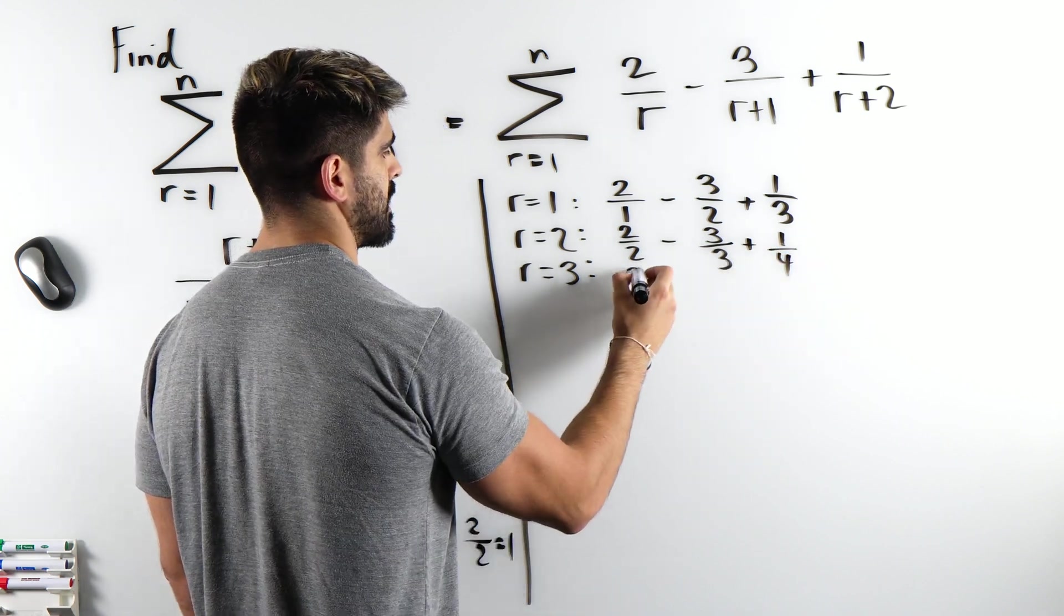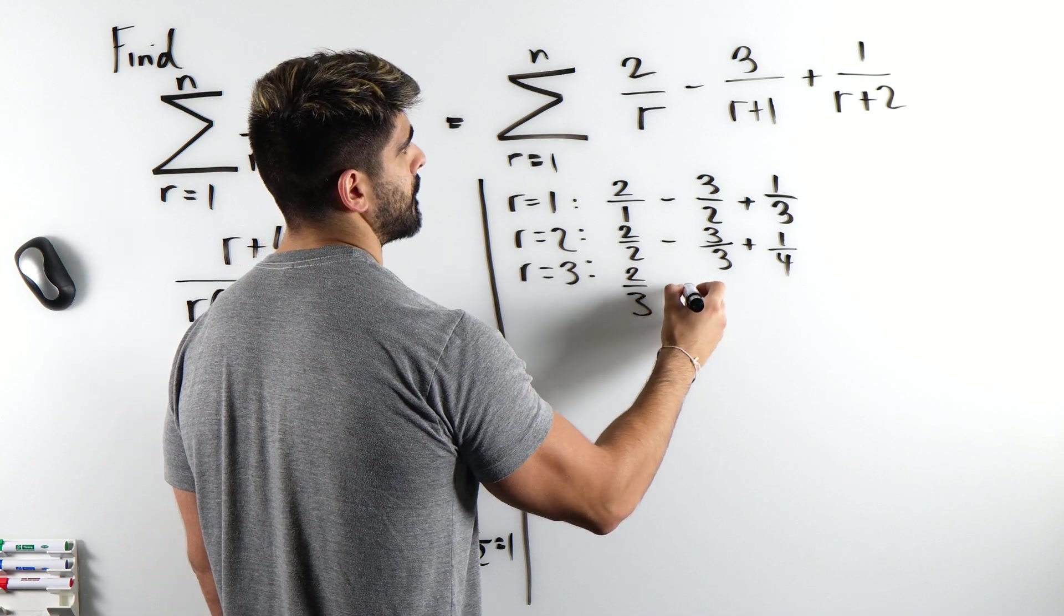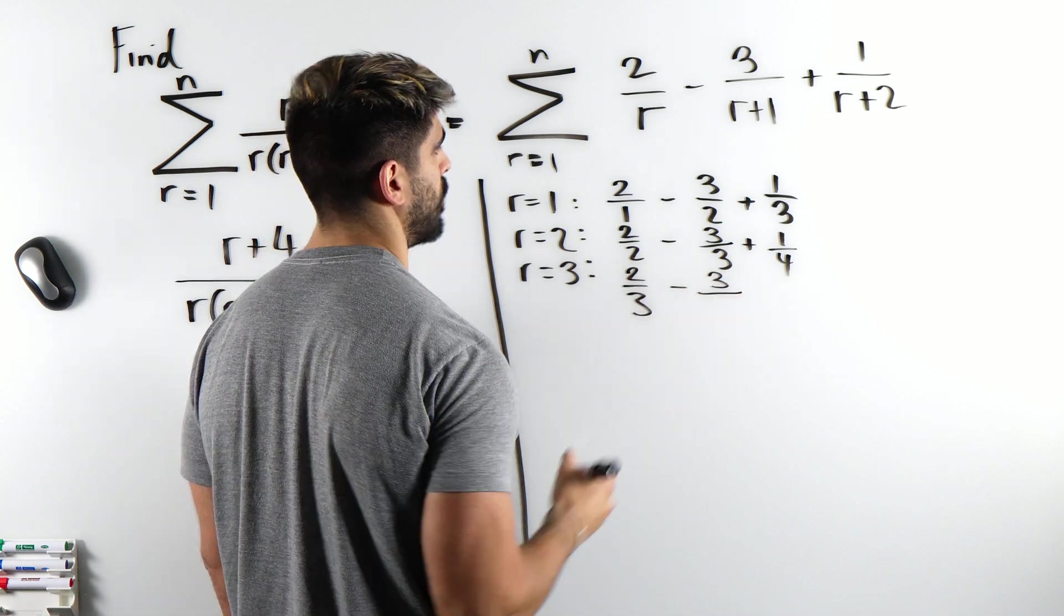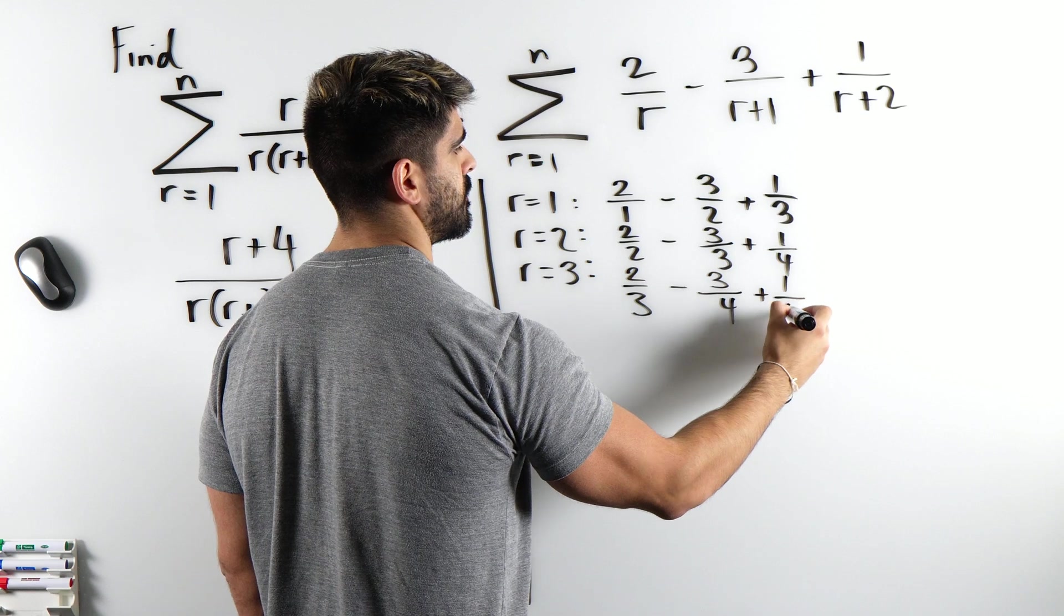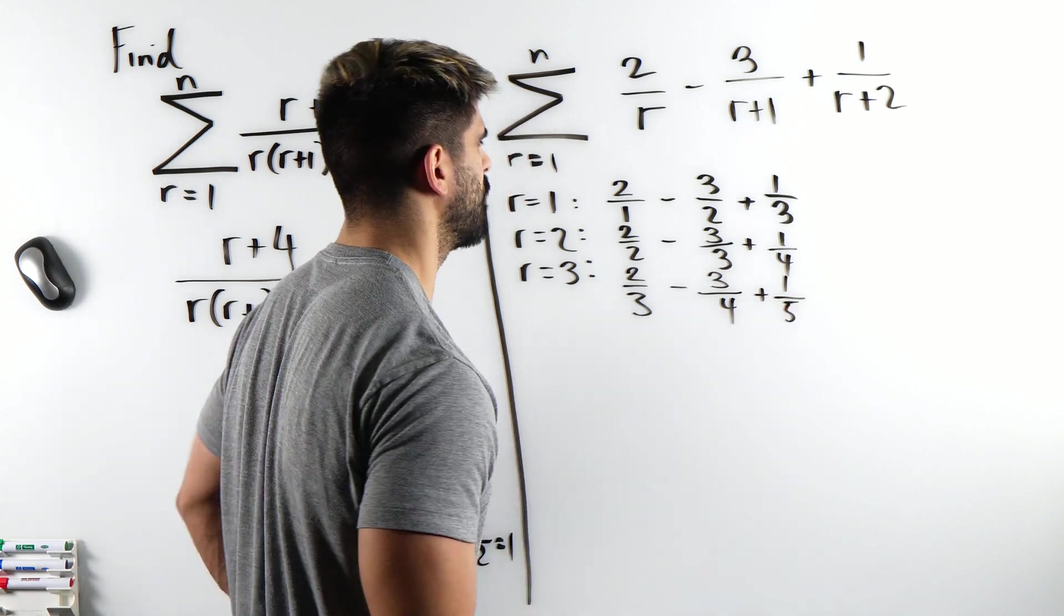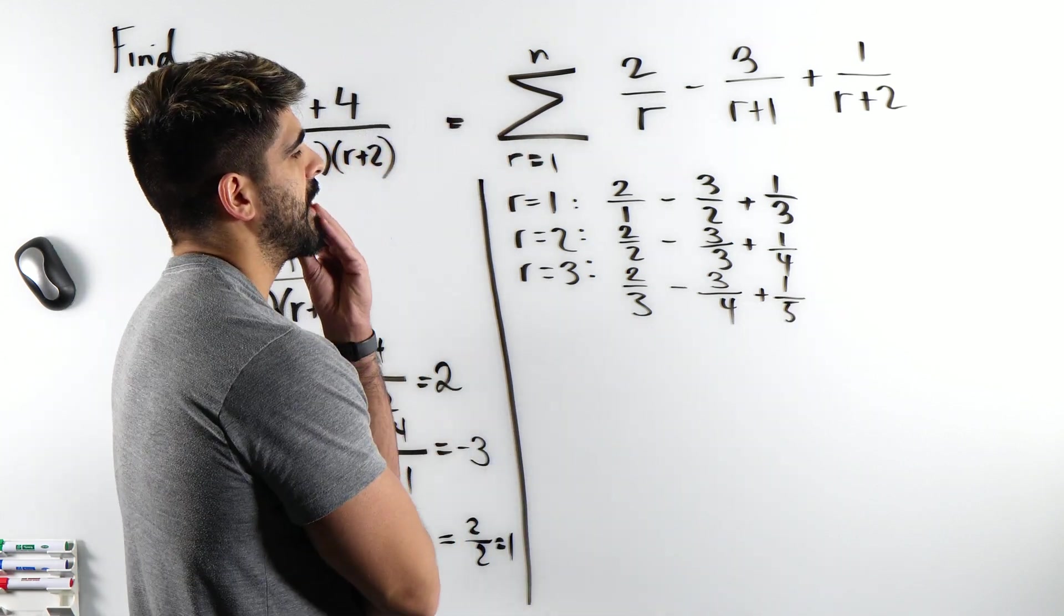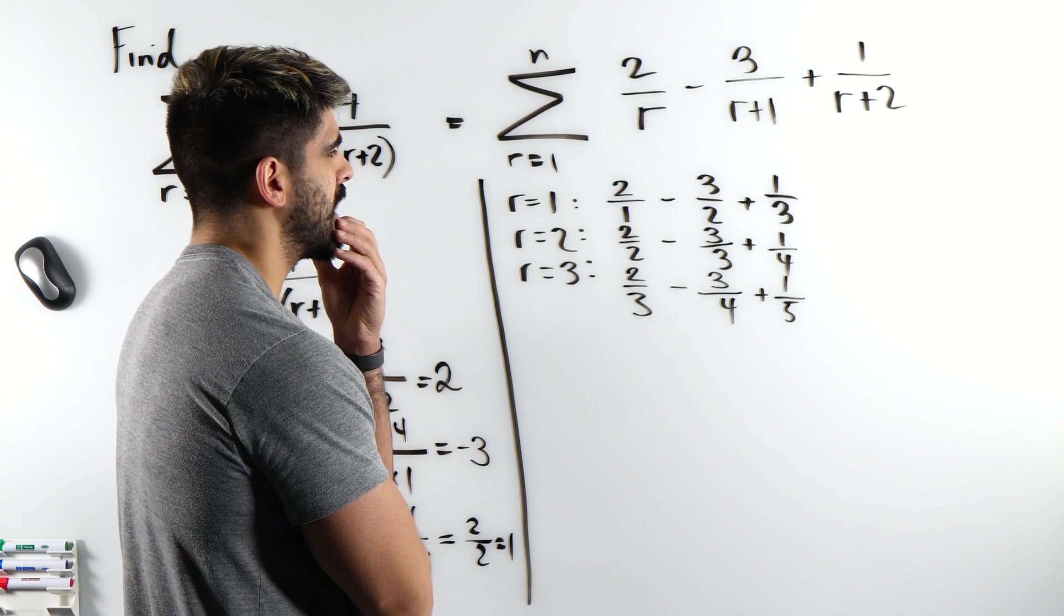Then when we have 3, we get 2 thirds minus 3 over 4 plus 1 over 5. I mean I'm not really seeing a pattern yet. Can you see how it's cancelling?